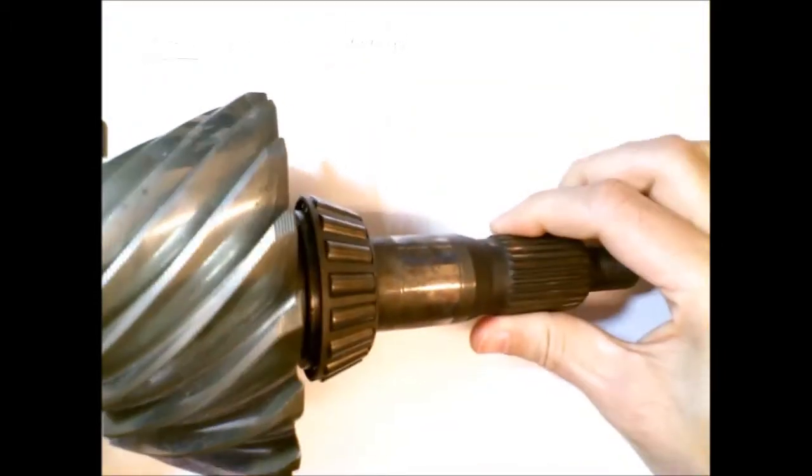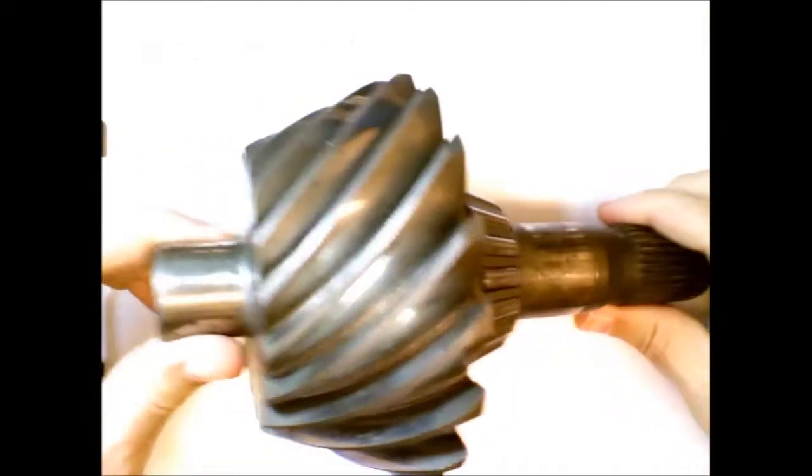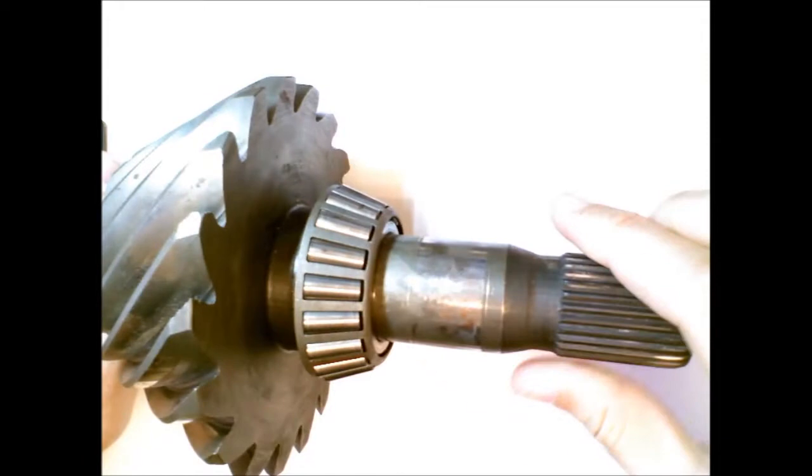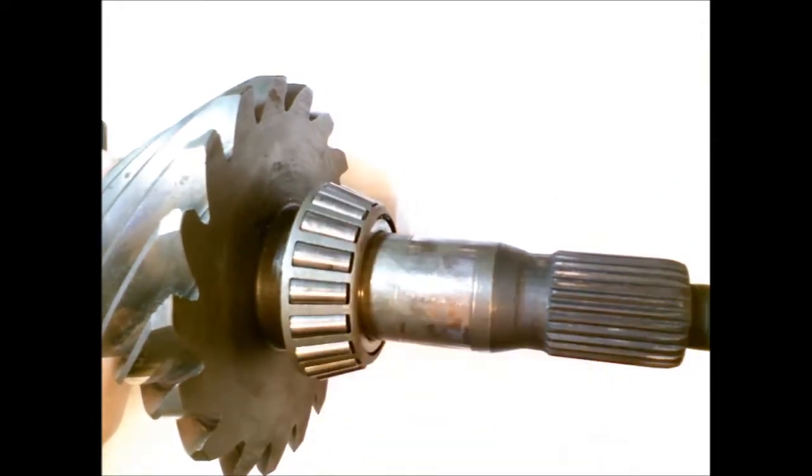Here's an example of a tapered roller bearing. This is a pinion gear from a large differential. And here's the tapered roller bearing. We don't have the outer race here.